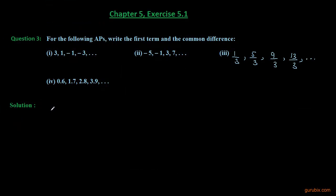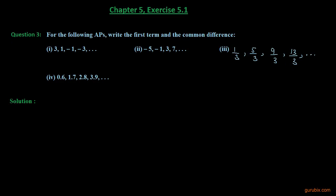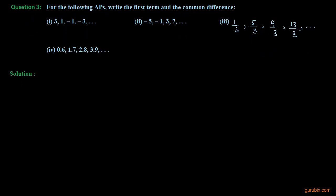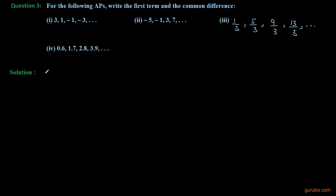Here is question number 3 of Exercise 5.1 of Chapter 5. This question says: for the following APs — we are given 4 APs, numbers 1, 2, 3, and 4 — write the first term and the common difference. So let us see how to solve this question.